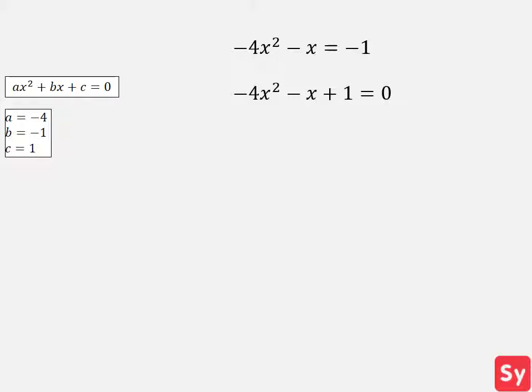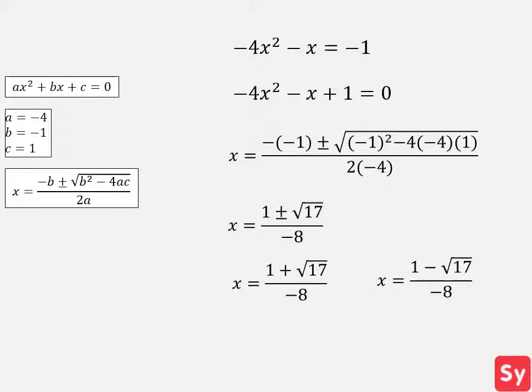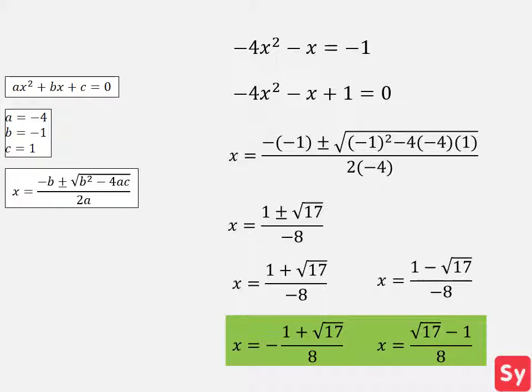Now we take a look at the quadratic formula. Since we know what a, b, and c are, we can plug these values into the equation to find the value of x. This simplifies to x equals 1 plus or minus the square root of 17 over negative 8. We split this into two equations and simplify to get x equals negative 1 plus the square root of 17 over 8, and x equals the square root of 17 minus 1 over 8 — our answer.